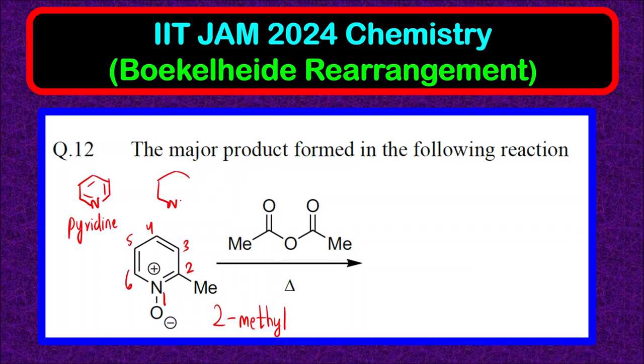When you oxidize this pyridine, what you get is O-N+. This is pyridine N-oxide. So, this will be 2-methyl pyridine N-oxide.